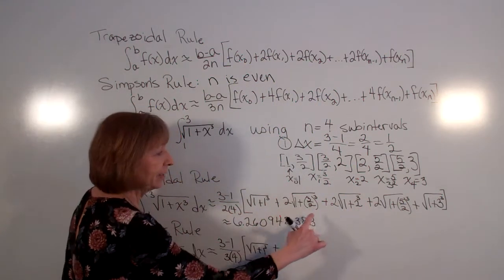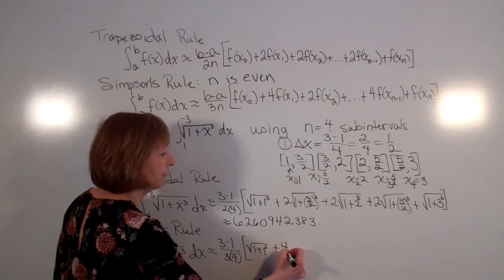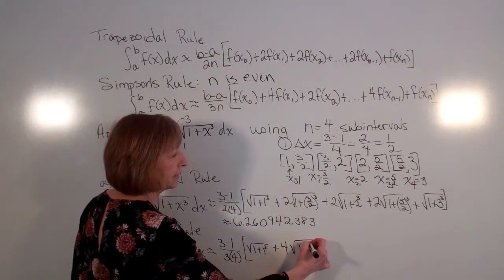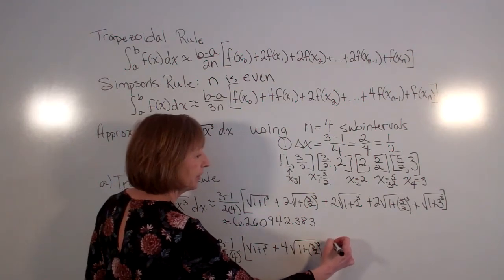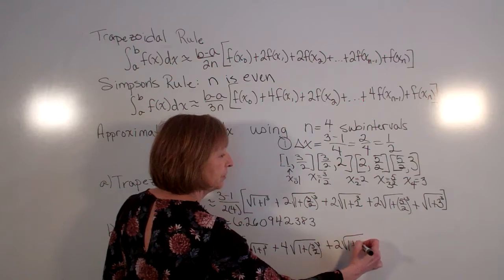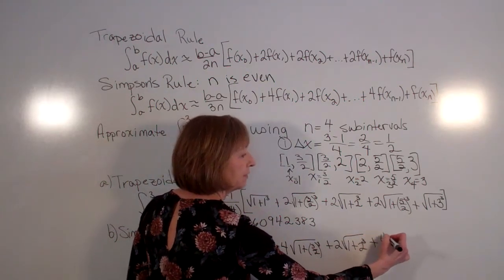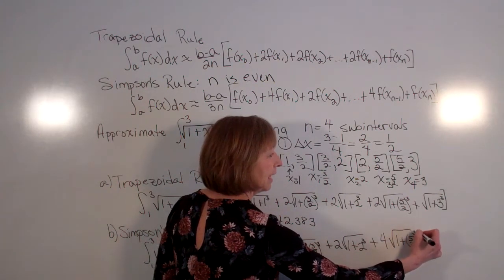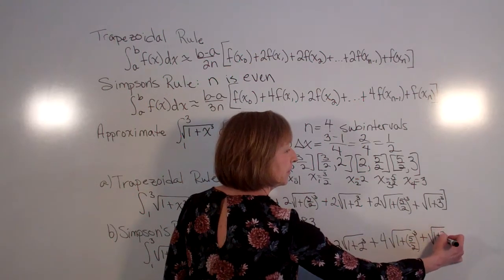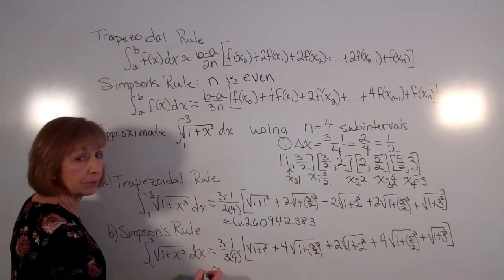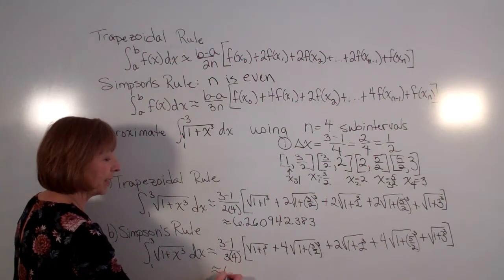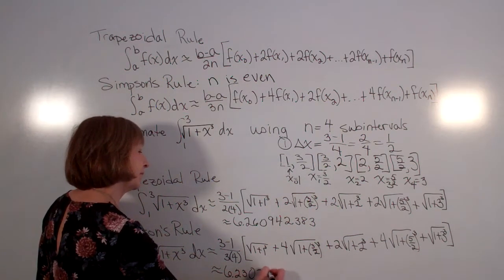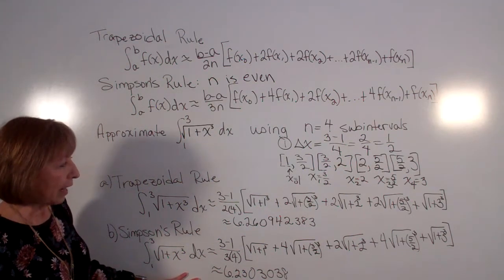So I can just look here and just remember that I'm going to have that coefficient of 4 on every other of those middle ones. So 4 times the square root of 1 plus 3 halves cubed, plus 2 times the square root of 1 plus 2 cubed, plus 4 times the square root of 1 plus 5 halves cubed, and then plus my square root of 1 plus 3 cubed. And when we go through and we work that all out, we get that that's approximately 6.2303038 for our approximation.